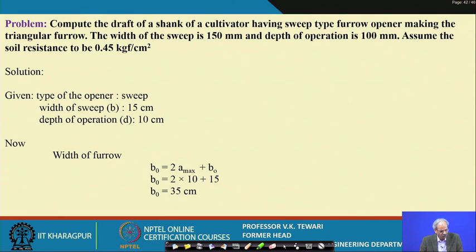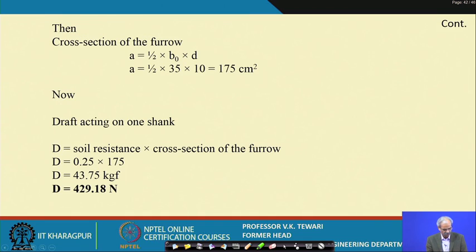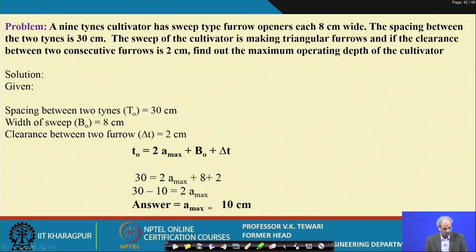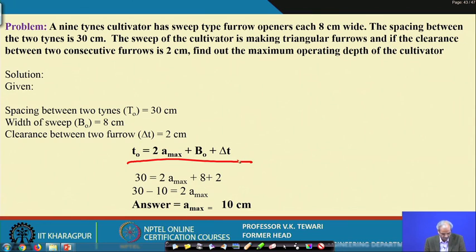A problem is provided to help understand how to find the total cultivator opening zone or total width of the furrow cut by the small elements connected to the cultivator. For a 9- or 10-tine cultivator with given values, the formula for t0 can be applied to get the answer — a straightforward calculation once the values are substituted.